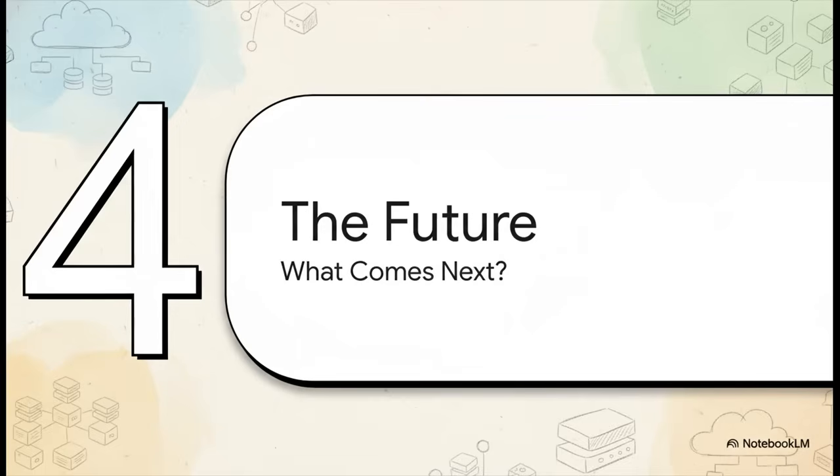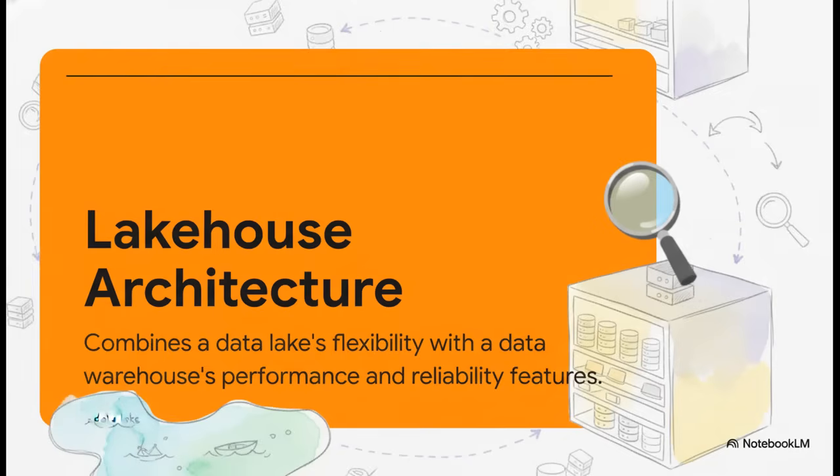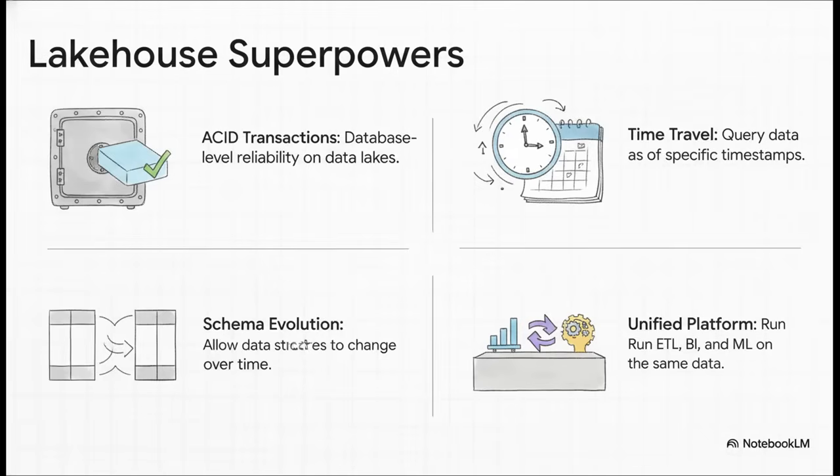So we have our foundation, our engine, and our conductor. But you know how it is with technology—it never, ever stands still. The core ideas we've just talked about are already evolving into new, even more powerful architectures. Right now, the big buzzword you're going to hear everywhere is the lakehouse. For years, companies have had this messy, cheap data lake for all their raw data, and then a completely separate, really expensive, highly structured data warehouse for their business reports. The whole idea of the lakehouse is to merge them, to get the absolute best of both worlds all in one single system.